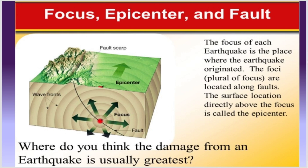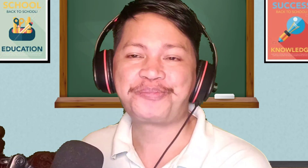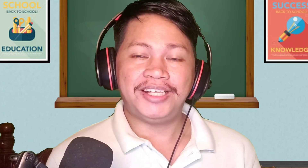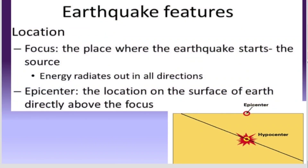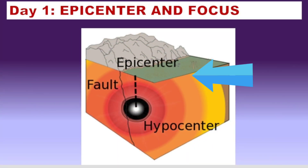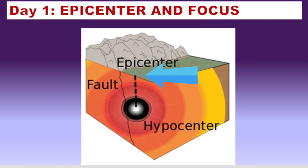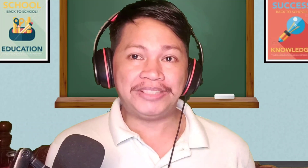Here's a question: where do you think the damage from an earthquake is usually greatest? If you know the answer, please type it in the comment section. To deepen our understanding, here is another description: the focus is the place where the earthquake starts — the source — where energy radiates out in all directions. The epicenter is the location on the surface of the Earth directly above the focus. It is very clear that the epicenter is directly above the hypocenter, and there is a fault line between them.